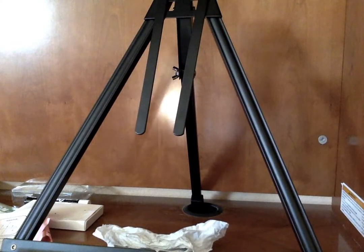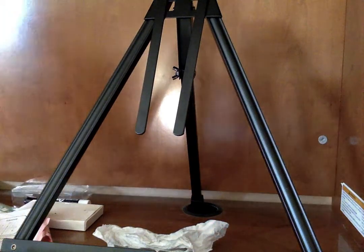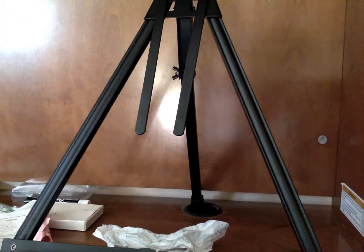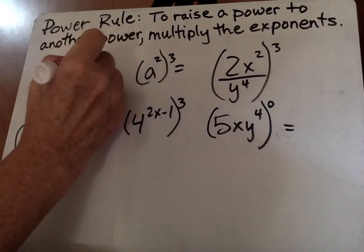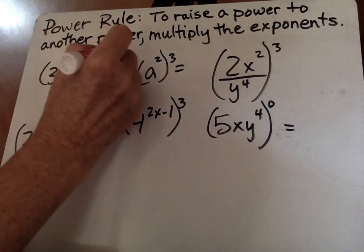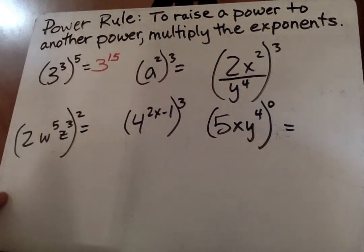The last one we're going to talk about is your power rule. That's when you raise a power to another power. You multiply the exponents. So I have 3 to the third raised to the power of 5. 3 times 5, 15. Next one, I'll let you do that one on your own.